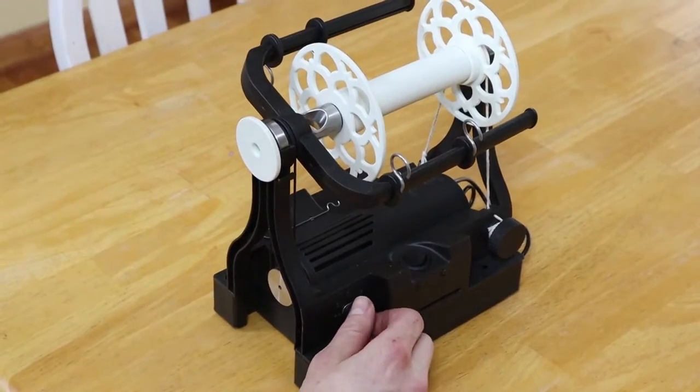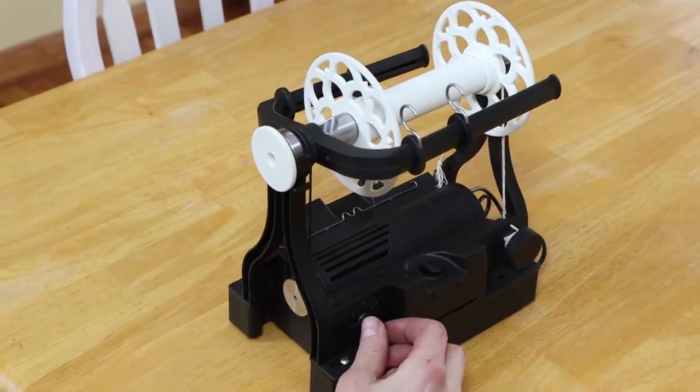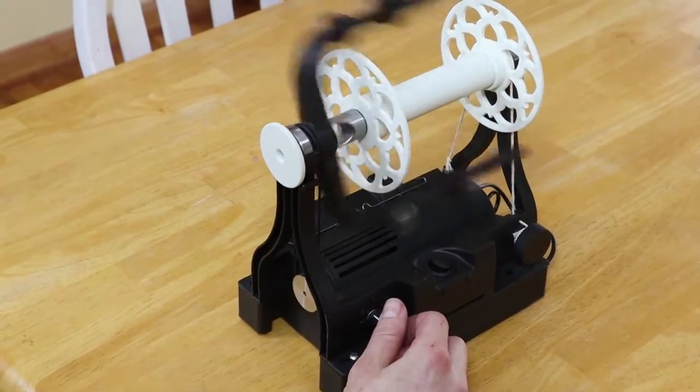All the controls are simple. This dial controls the speed. The twist switch changes the direction of the flyer so that you can spin S or Z twist yarn.